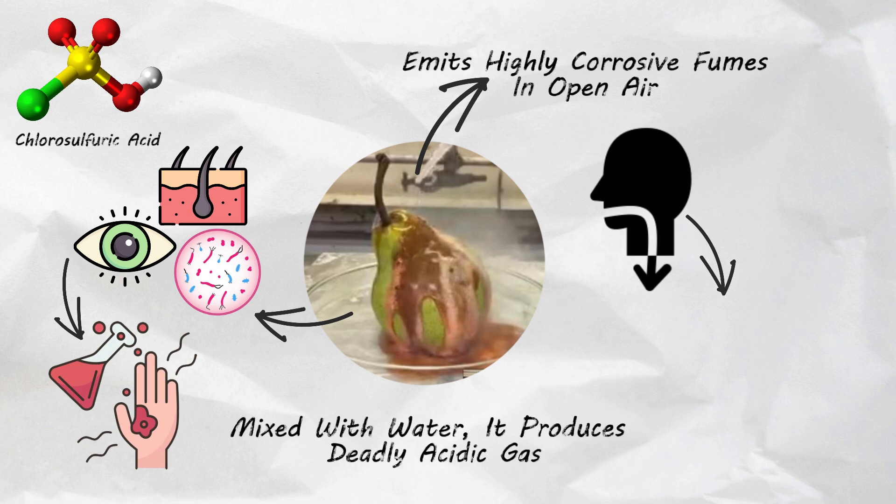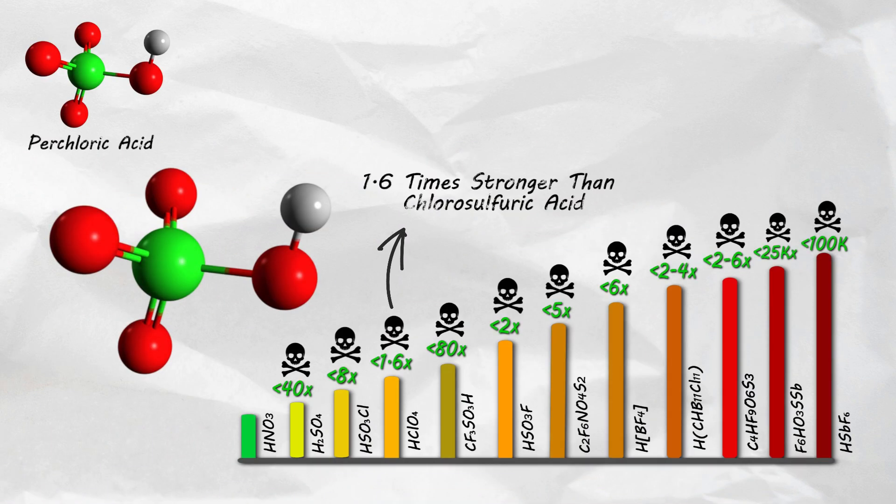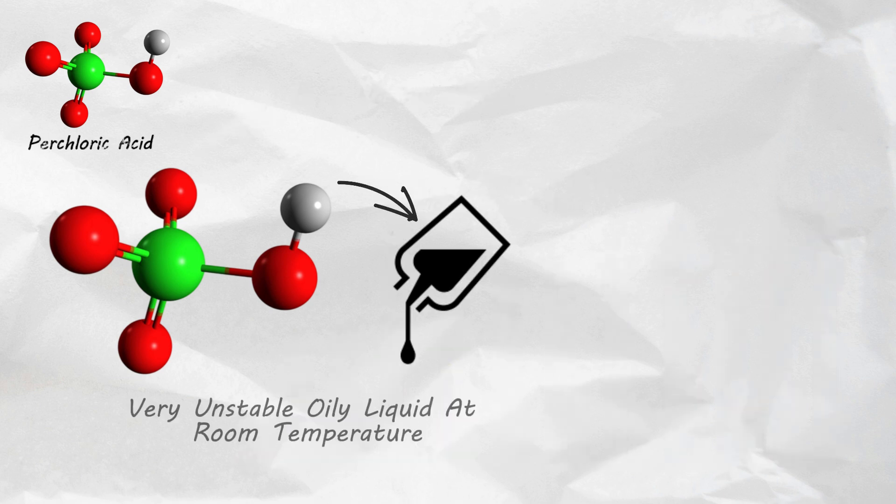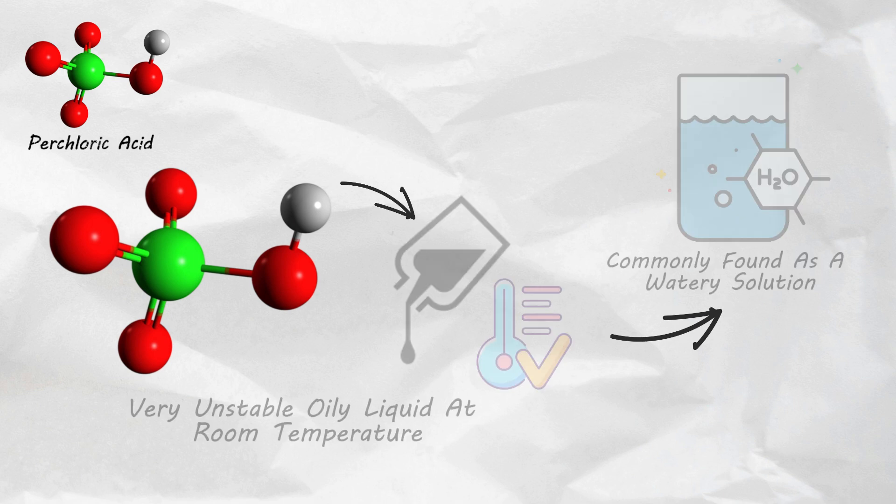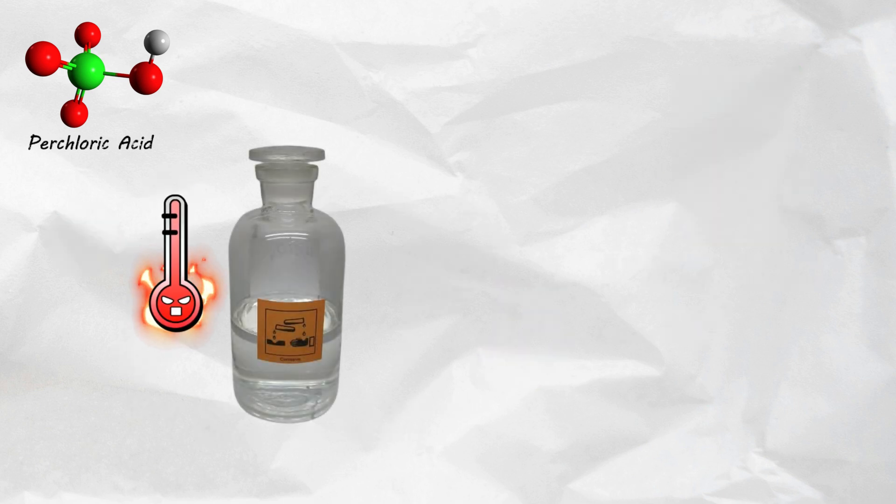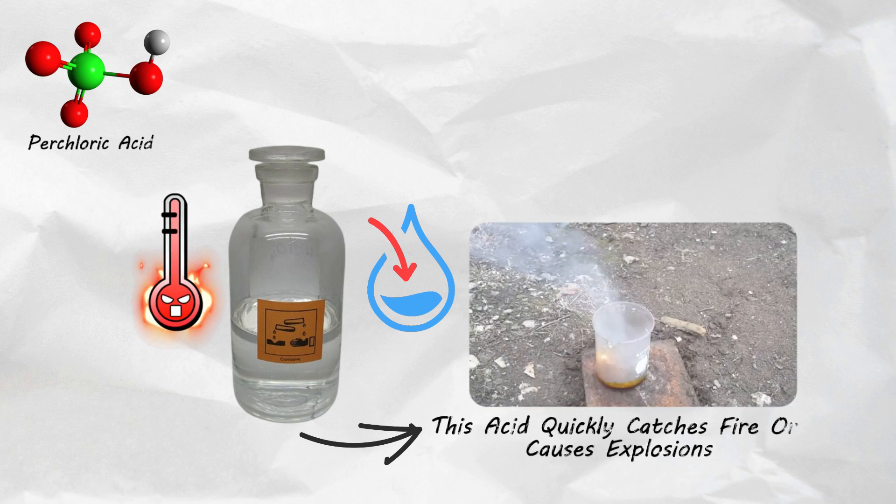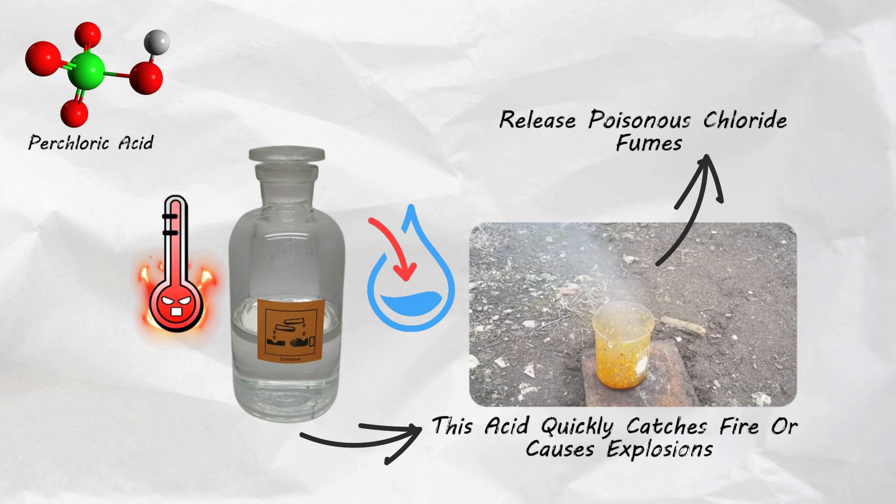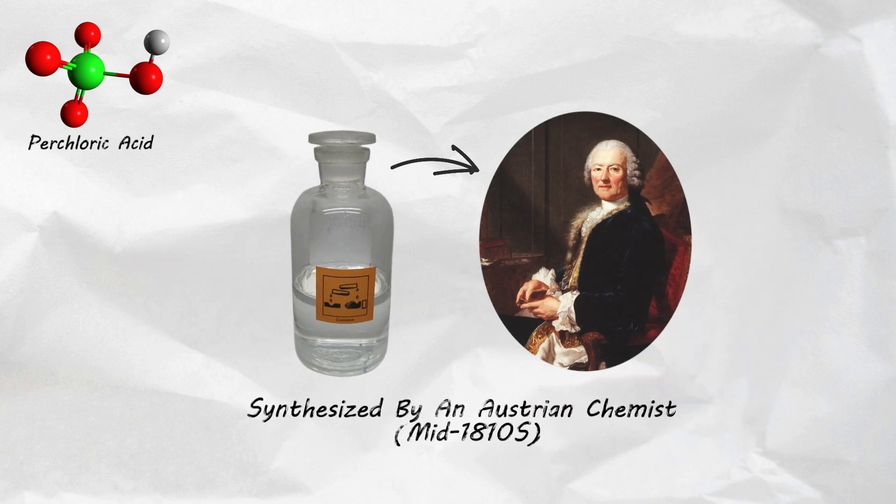Perchloric acid. Even though this stuff is only 1.6 times stronger than chlorosulfuric acid, it is vastly different. This is a very unstable oily liquid at room temperature and therefore is commonly found as a watery solution. If it becomes too hot or allowed to dehydrate, this acid quickly catches fire or causes explosions, releasing poisonous chloride fumes.